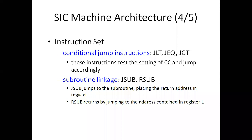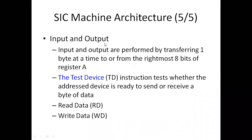These instructions will be used in program examples I will explain shortly. For subroutine linkage, we use JSUB and RSUB, which I explained yesterday. For input and output: input is taken from an input device like a keyboard and stored into memory, whereas output displays data stored in memory to an output device — the standard output device being the monitor.